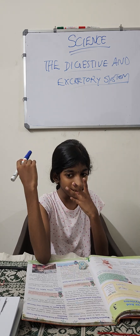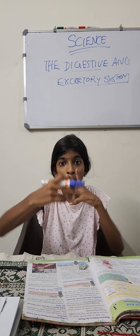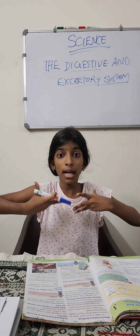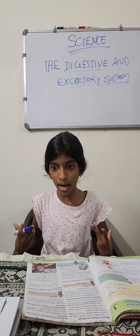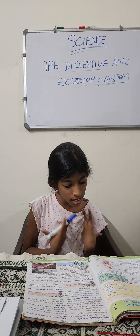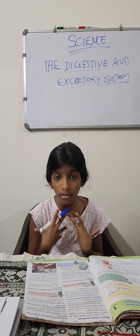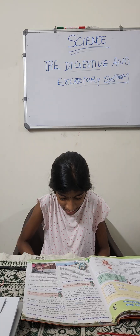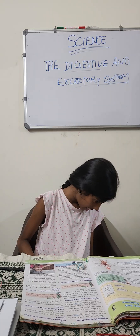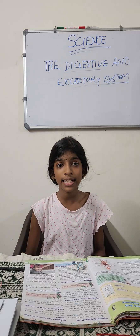The circulatory system pumps the blood. The digestive system digests the food.